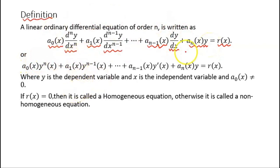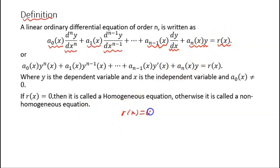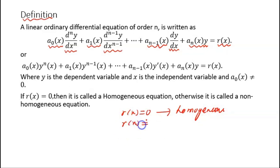There are different ways to categorize a linear differential equation. The first categorization is by looking at the right-hand side. If r(x) is equal to 0, it is known as a homogeneous linear differential equation. If r(x) is not equal to 0, it is known as a non-homogeneous linear differential equation.